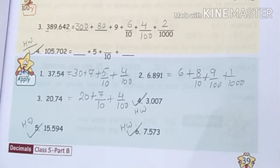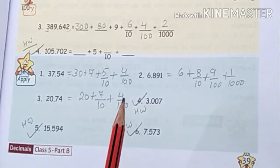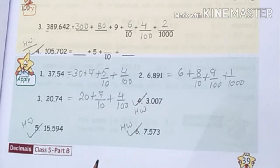Questions number 4, 5, and 6 are your homework. The pattern is the same. If your method is clear, you can solve any digits that come in your question paper. So questions 4, 5, and 6 you must solve in your homework copy.